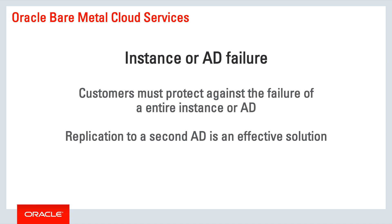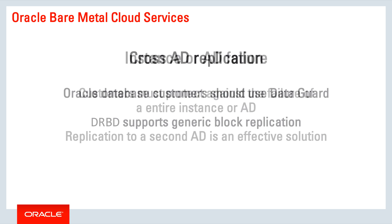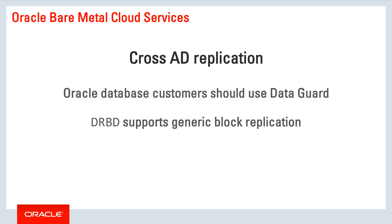Customers also need to protect against the failure of an instance or an availability domain. The best way to do this is to replicate the data set to a second availability domain. There are multiple options for cross-AD replication: RSync, DRBD, and Oracle Database customers should use DataGuard. The availability domains were designed specifically to be close enough together to support synchronous replication.